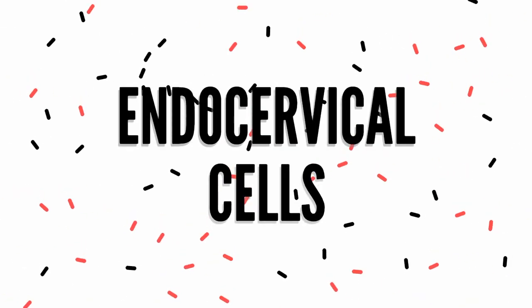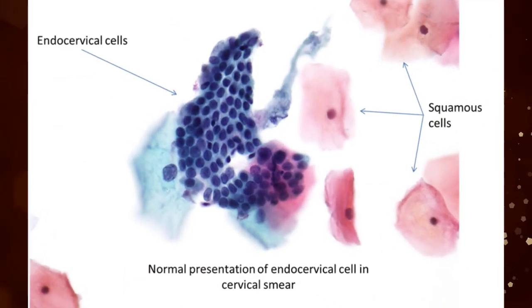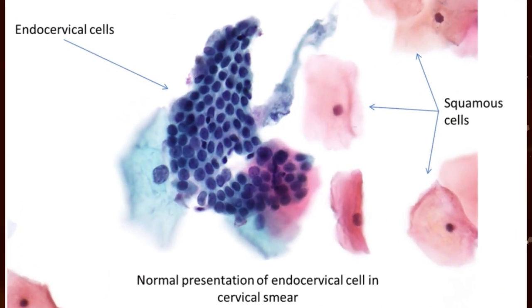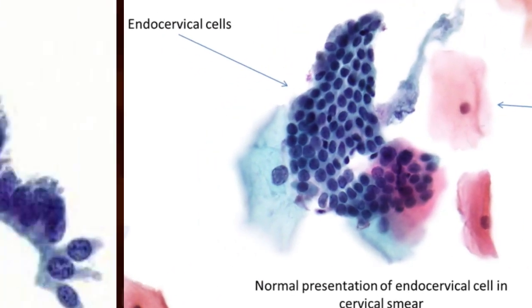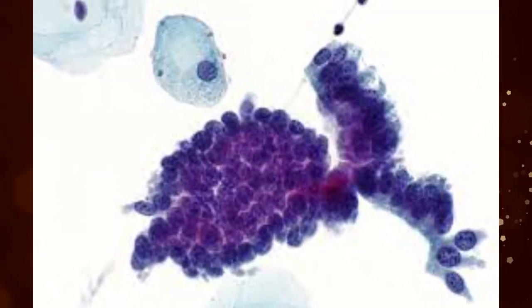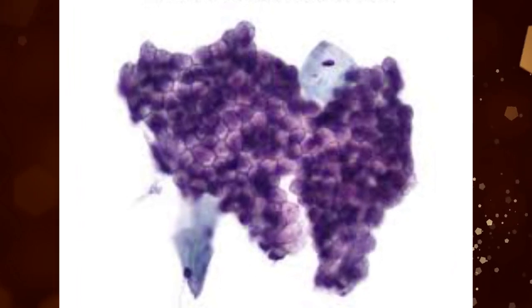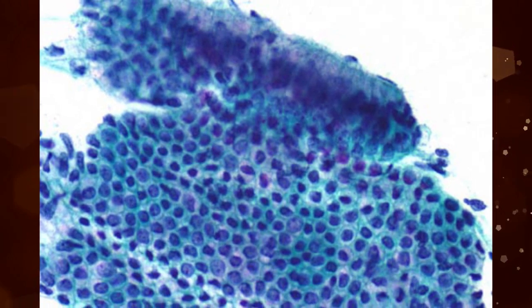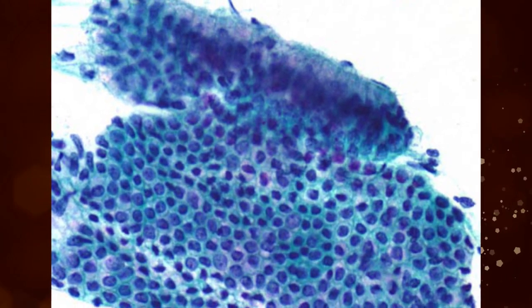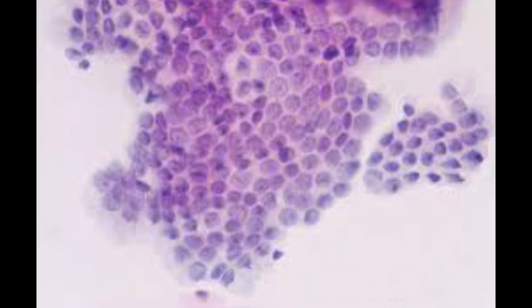Endocervical Cells can be seen on pap tests in three arrangements: single cells, as strips, or as a sheet. Endocervical cells also show a honeycomb appearance due to prominent cell borders. The cytoplasm is cyanophilic and translucent, or vacuolated. Nuclei have evenly granular chromatin.